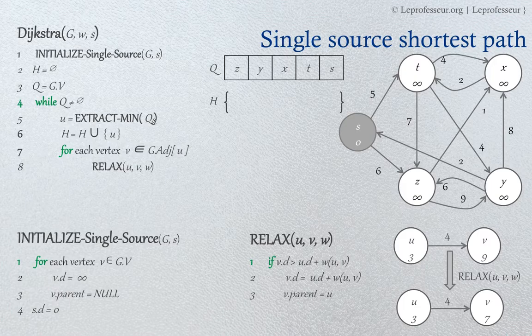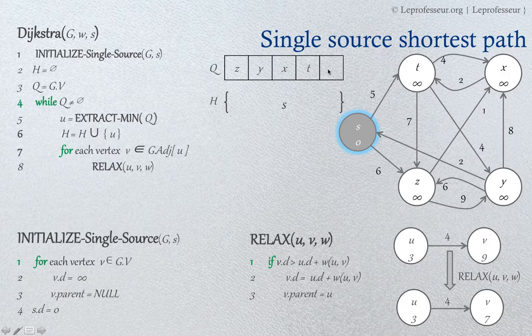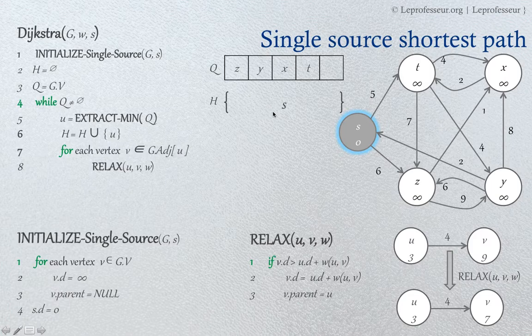We extract the minimum key value node from Q. The minimum key is zero, which is the source vertex S. As soon as we select S, we execute the extract-min operation, which removes S from the priority queue. The union operation at line number six makes a union with the set H — H was empty in the beginning, now H has the element S.